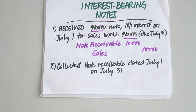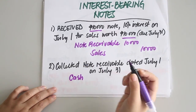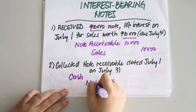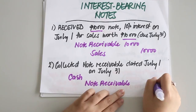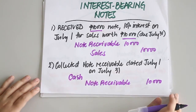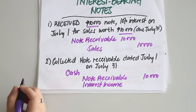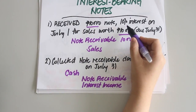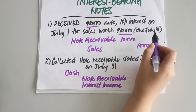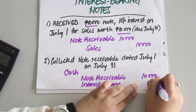The second transaction is the collection of the note receivable on July 31. You would debit cash and credit notes receivable at the face value of 10,000 pesos. With interest bearing notes, you also credit interest income. Interest income is computed by multiplying the face value of 10,000 pesos by the rate of 10% and the term of 30/360, giving 83.33 pesos.